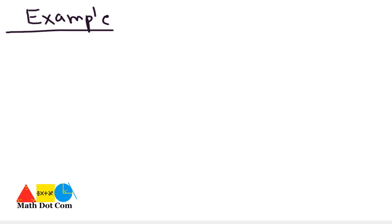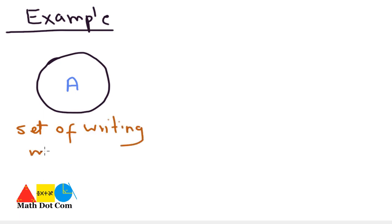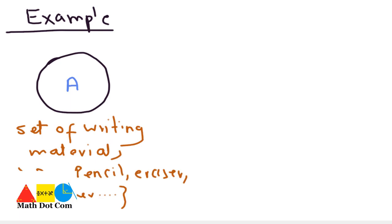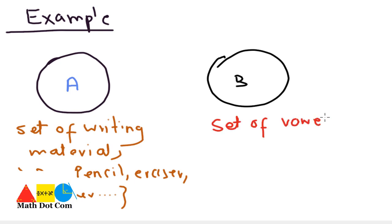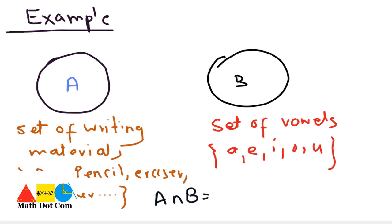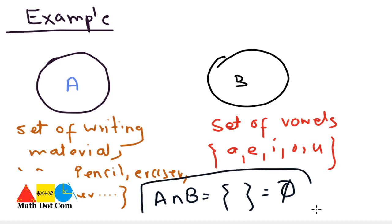Let's have one more example. You have a set A which is a set of writing materials, and one more set D which is a set of vowels. If asked whether the two sets are disjoint or not, the answer depends on their intersection. It is clear they have nothing in common, so A intersection B equals empty set, and we can say A and B are disjoint sets.